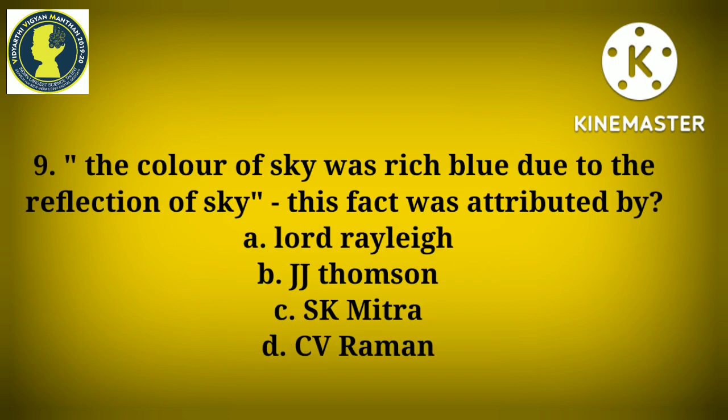Question nine: The color of the sky was said to be blue due to the reflection of the sky. This fact was attributed by one famous scientist — you have to name that scientist. The correct option is Option A, Lord Rayleigh. This was later proven wrong by CV Raman, who proved it is due to the scattering of light, not reflection.